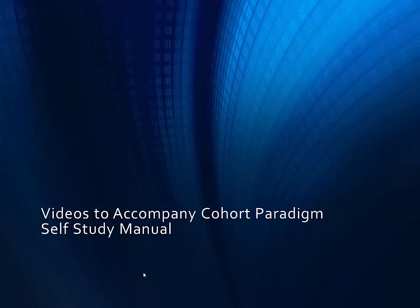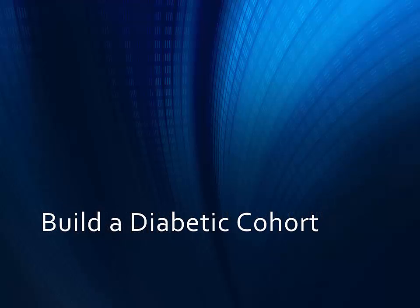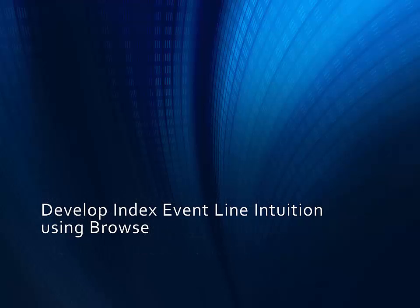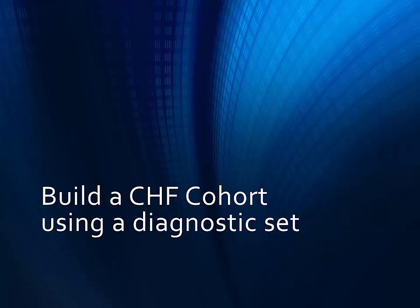What follows will be videos to accompany the Cohort Paradigm Self-Study Manual. You will learn how to build a diabetic cohort, then build a diabetic cohort that was ultimately brought to bad control or to good control using the within temporal operator. You will develop Index Event Line Intuition using the Browse function, and you will learn to build a CHF cohort using a diagnostic set.